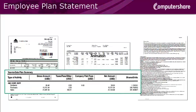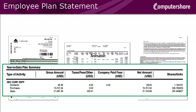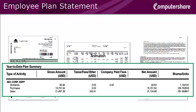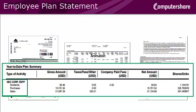The Year-to-Date Plan Summary is a new section on the statement which shows you all of your employee plan activity up to the statement date. This section shows total dollars for transactions such as sales, purchases, and dividends, as well as the number of units or shares.